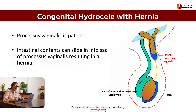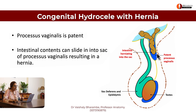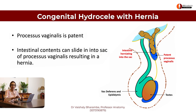Now let's talk about one last thing. When processus vaginalis does remain patent, but the patent opening is so large that the intestines want to come in too — can you see the intestine coming in here? So this is a congenital hydrocele with a hernia. Fluid is already there, resulting in a hydrocele, but this is a hydrocele associated with a hernia.